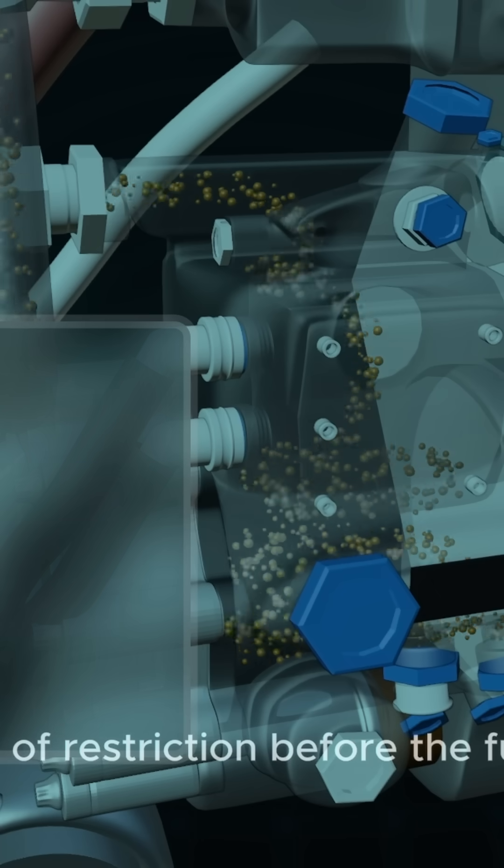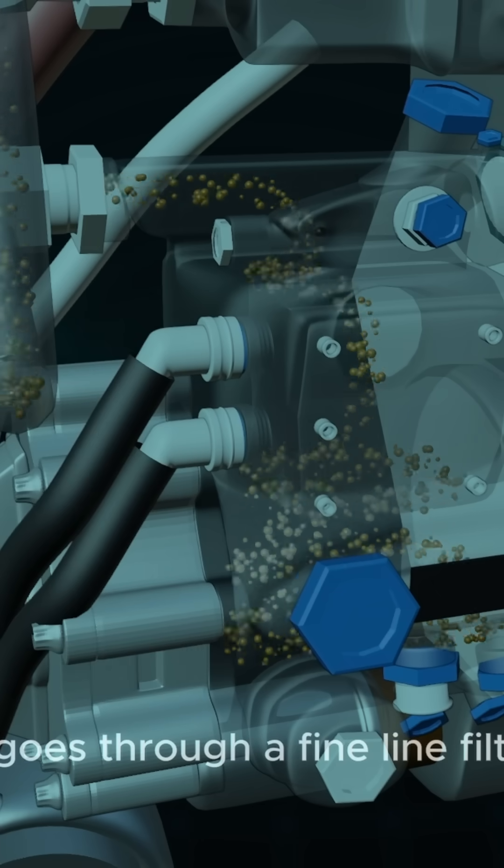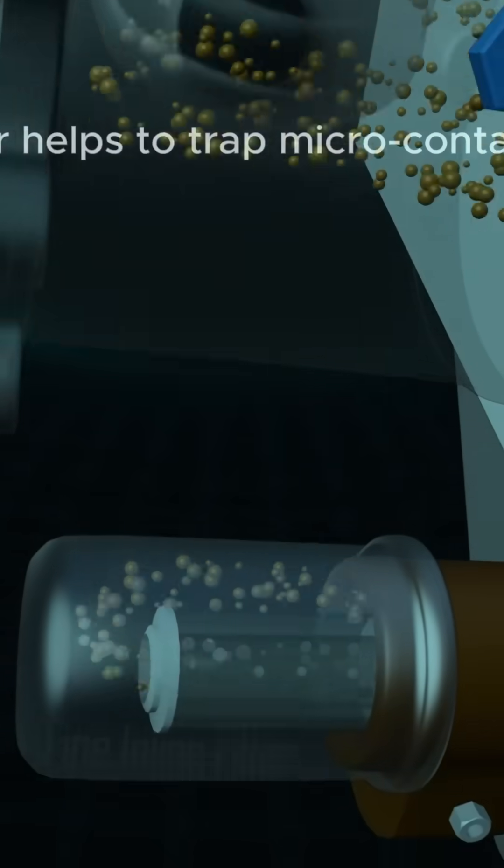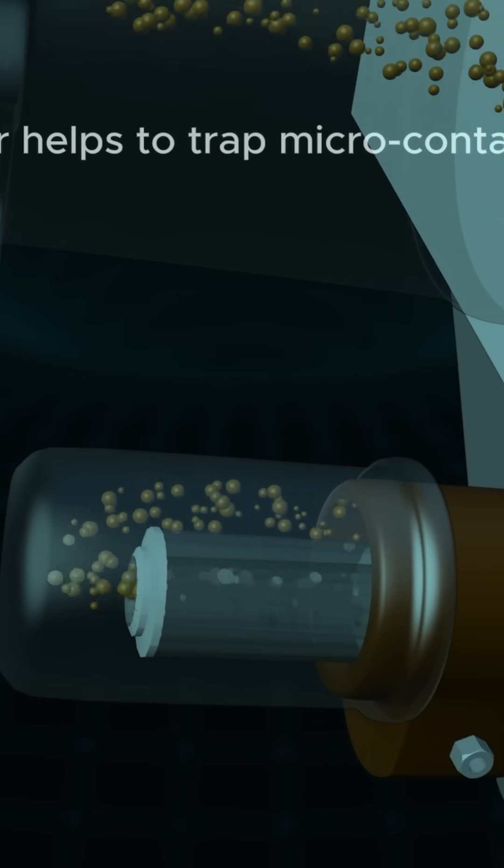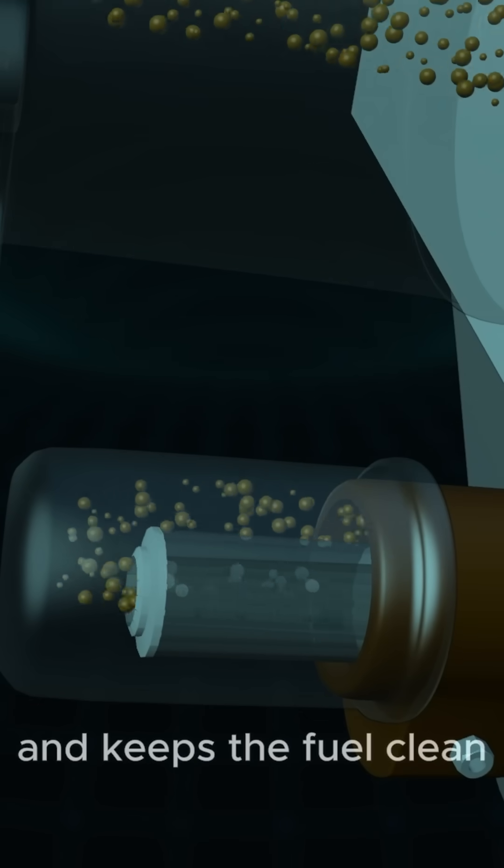Before the fuel exits, it goes through a fine line filter. This filter helps to trap micro contaminants and keeps the fuel clean.